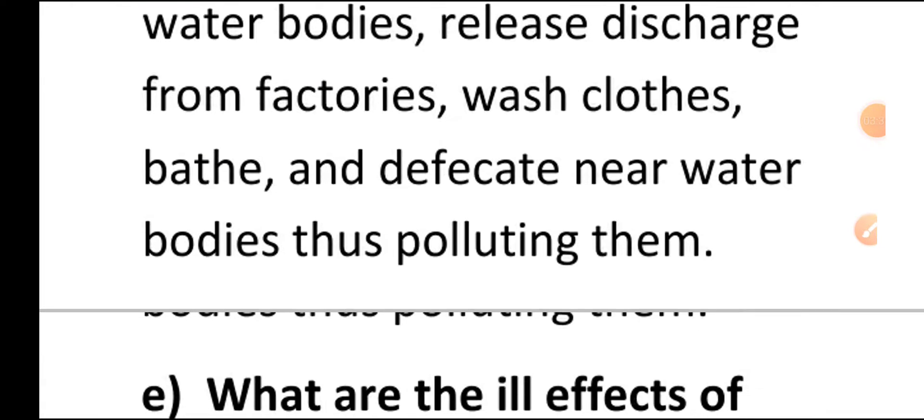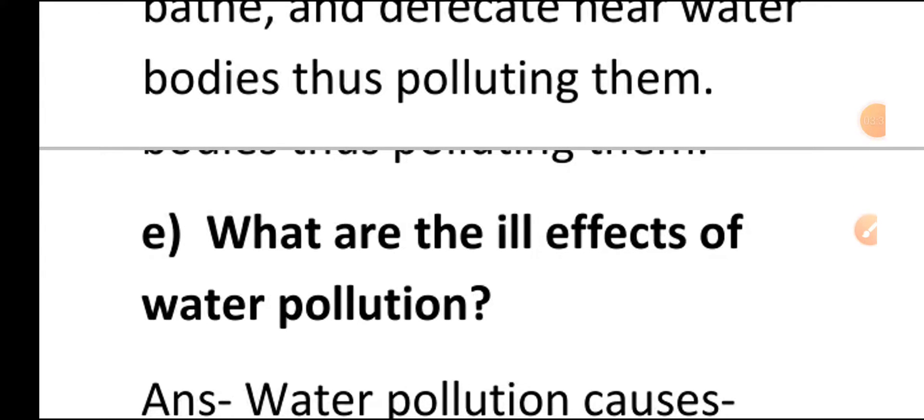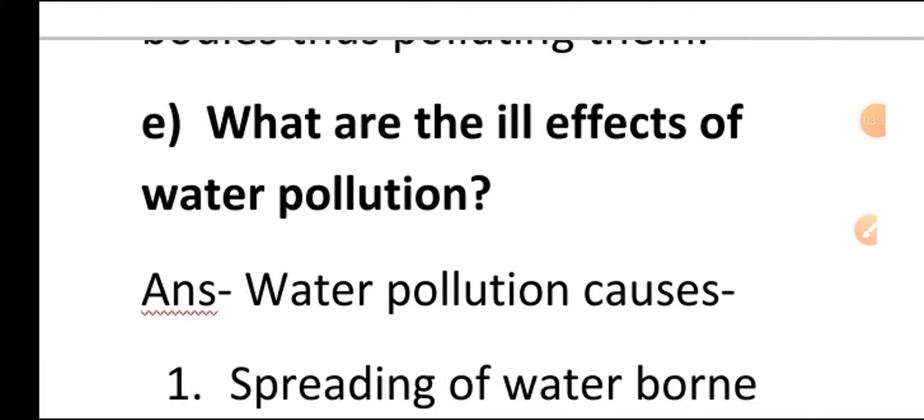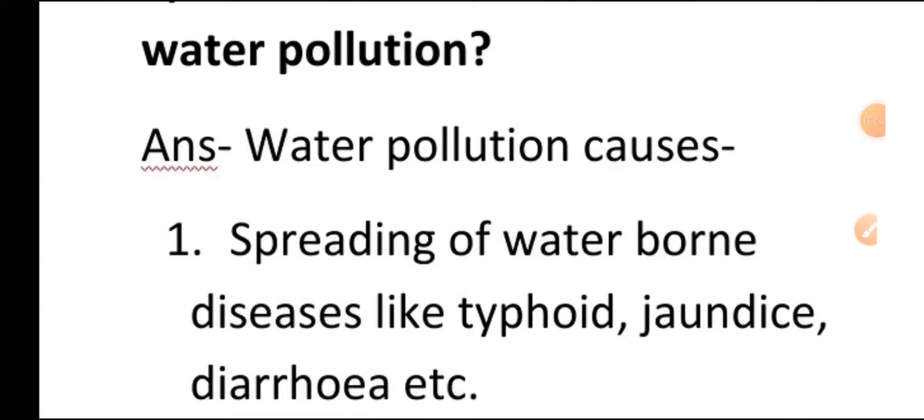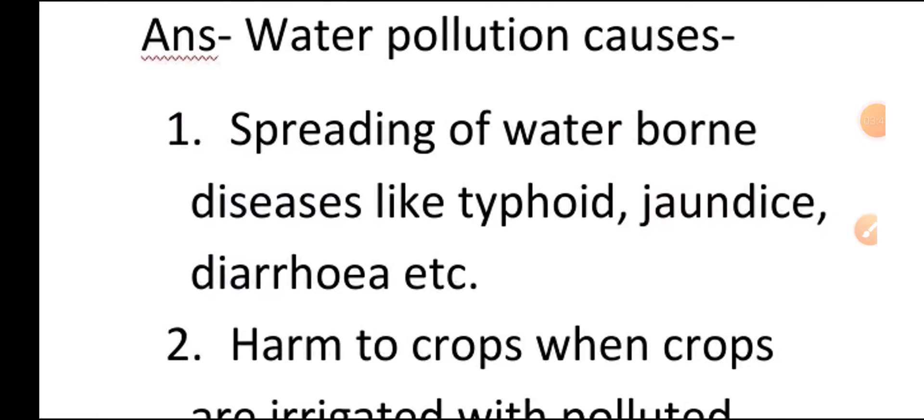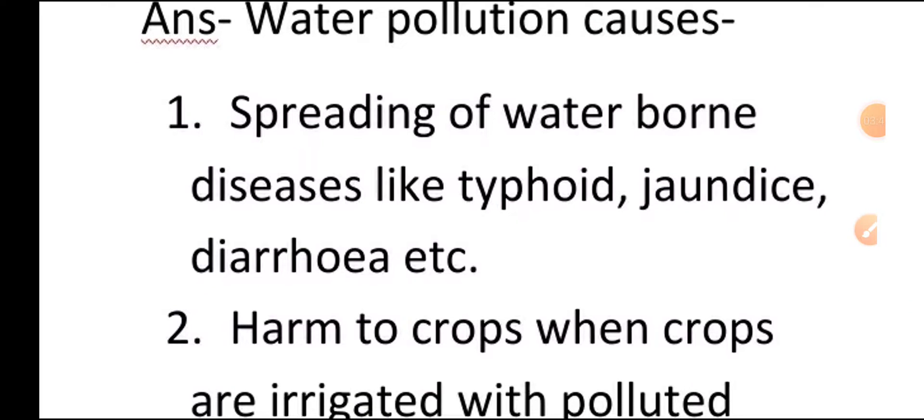Next question: what are the ill effects of water pollution? Answer: water pollution causes number one, spreading of waterborne diseases like typhoid, jaundice, diarrhea, etc.